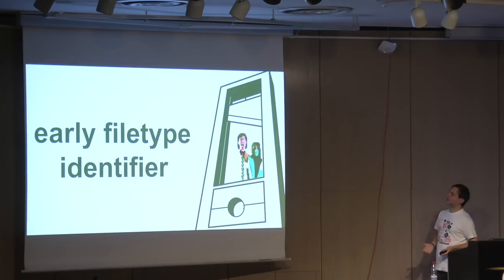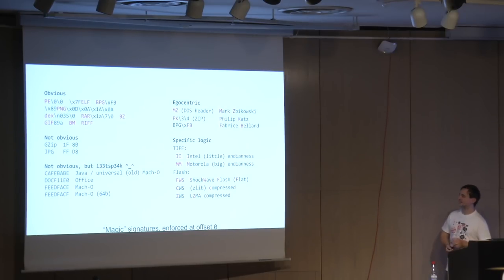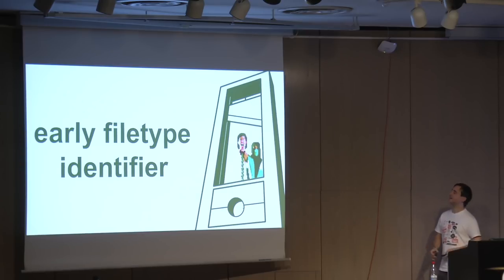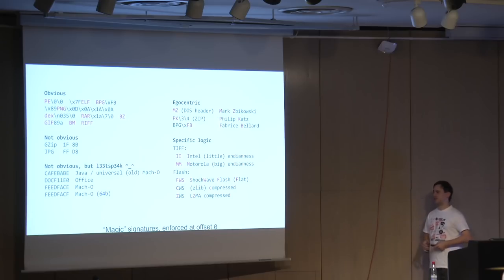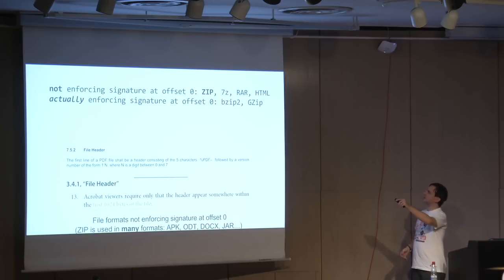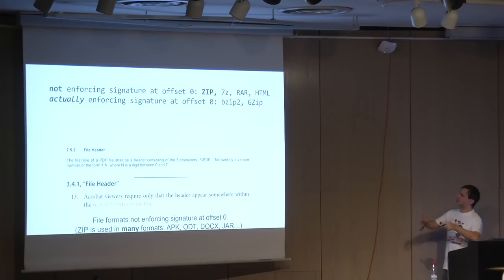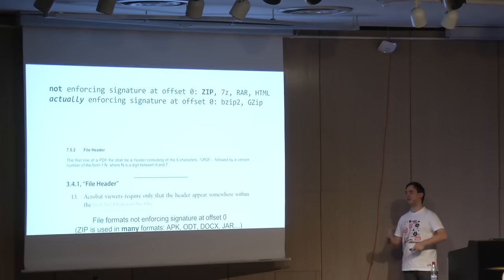Here is an early file type identifier from French technology — basically, you look at the head. Typically the file type is identified by a signature called magic that is fixed and enforced at offset zero. Some have a meaning, some don't. Most file formats have a magic signature at offset zero. Some don't, like some archive formats — particularly ZIP, which is also used in many other formats as APK, JAR, and others. PDF theoretically has to start at offset zero, but in practice only within the first kilobyte of the file. That's how I could abuse it — I could abuse PDF files a lot.